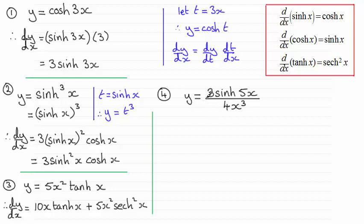In number 4 here, y equals 3sinh(5x) all over 4x³. I'm going to pick up on the quotient rule. So with the quotient rule then, dy/dx is going to equal the denominator here, 4x³, and I multiply this by the differential of 3sinh(5x). If I use the chain rule on this, much the same as I did here, then it's going to be 3 times the 5, which is going to be 15, and then we're going to have the differential of sinh, which turns out to be cosh, so it'll be cosh(5x).